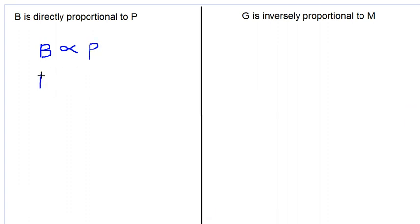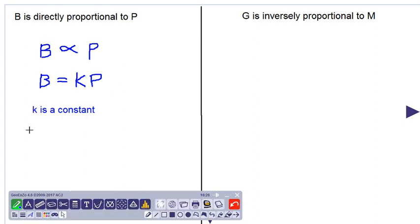So that means B is equal to some constant times P. So K is a constant, meaning K is a number. So B equals KP is an equation. And if we are given any additional data, we can find out the value of K.